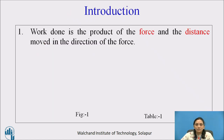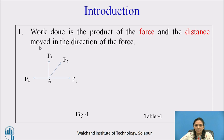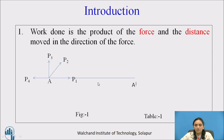First, let us see what is work done. Work done is the product of force and the distance moved in the direction of the force. For example, at point A, several forces are acting — P1, P2, P3, P4. As a result, A displaces from its old position to the new position, A dash, by the distance S.